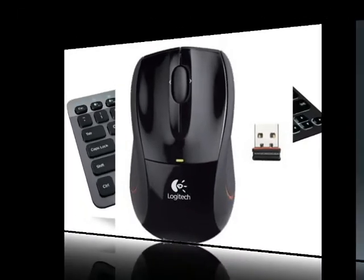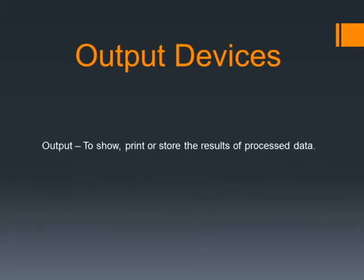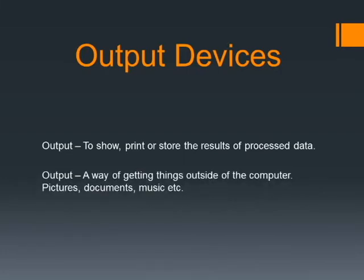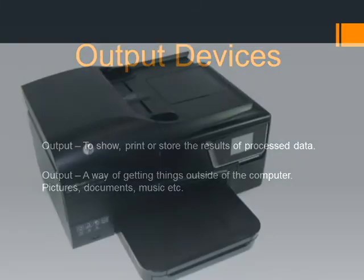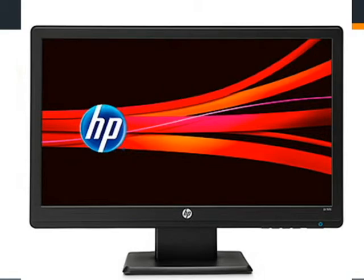Now moving on to output devices. The practical definition is: to show, print, or store the results of processed data. My definition is: a way of getting things out of the computer — for example, you print a document through the printer, or listen to music through a speaker. A common output device is the printer; my favorites are HP and Canon. Another main output device is the monitor, which shows you what's going on in the computer — your documents, videos, and so on.